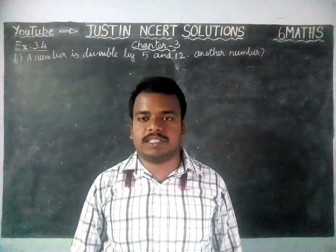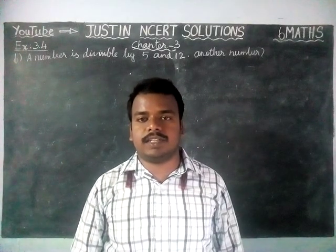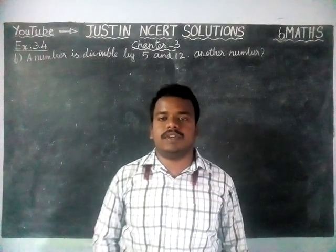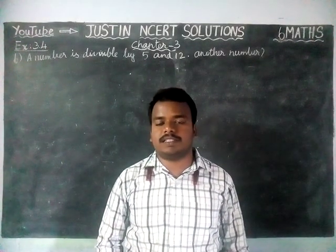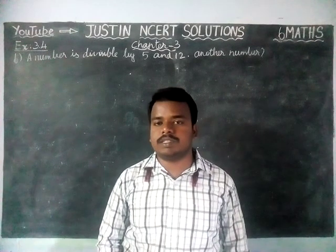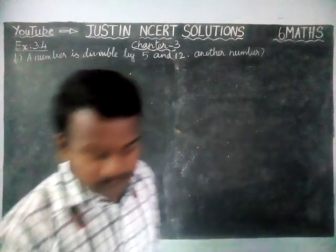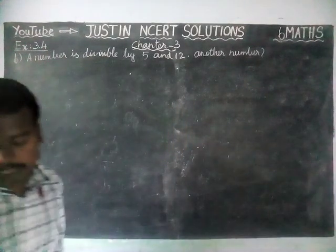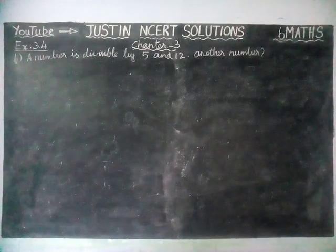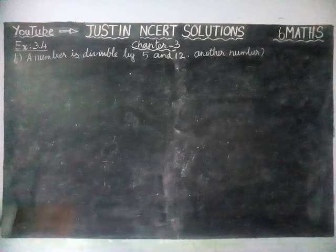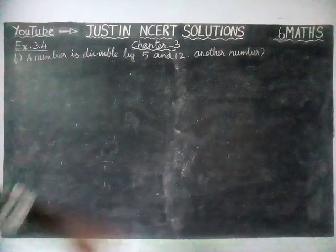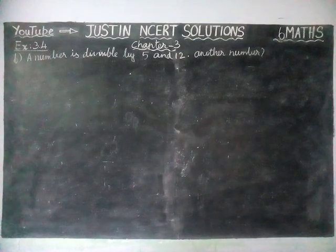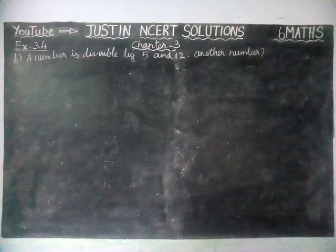Hi students, welcome to Justine NCRT Solutions. In this video we are going to see 6th Maths Chapter 3 Exercise 3.4. Here the question is: a number is divisible by both 5 and 12, then by which other number will that number be always divisible?